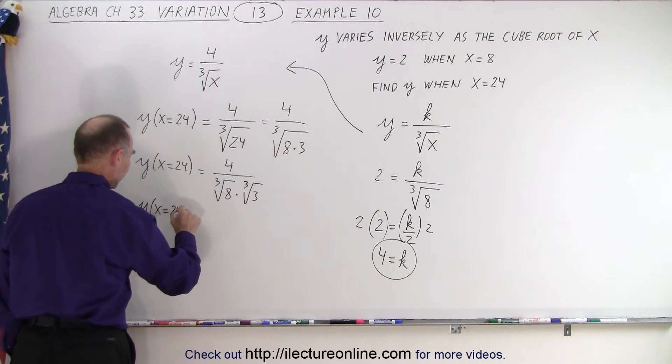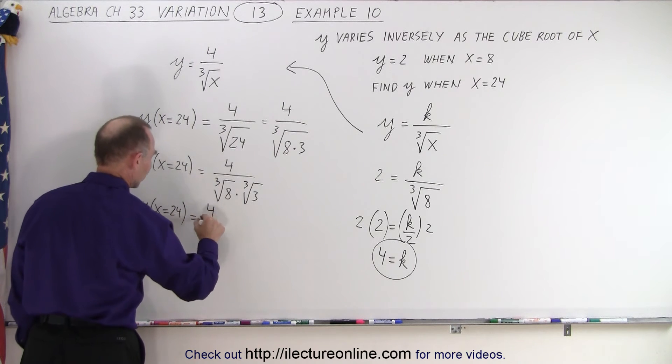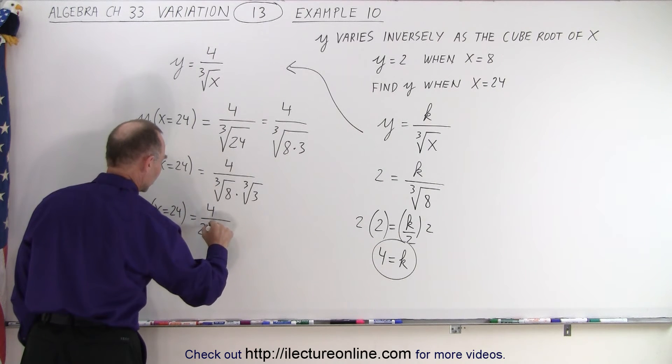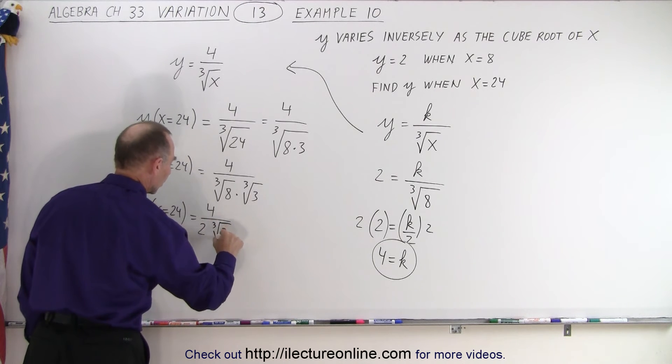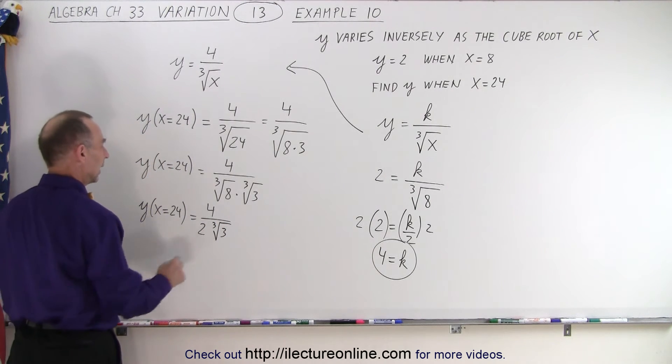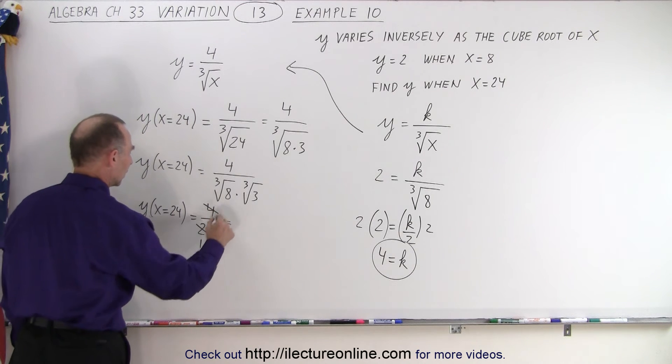when x equals 24, is equal to 4 divided by 2 times the cube root of 3. And the 4 and the 2 cancel, that is 1 and that is 2.